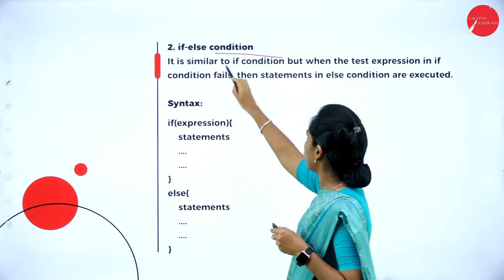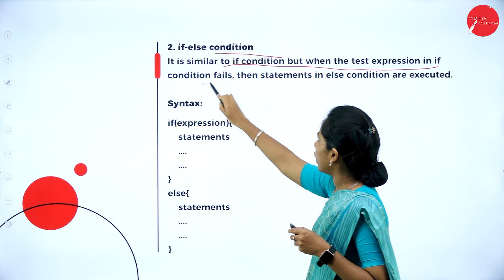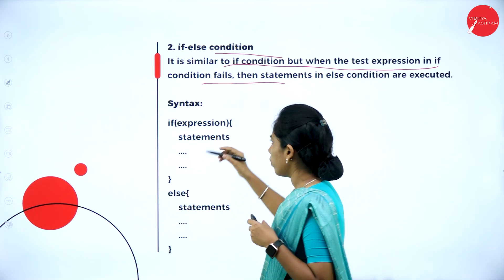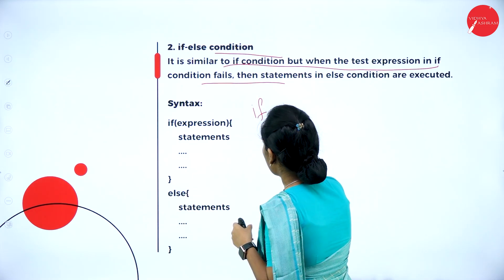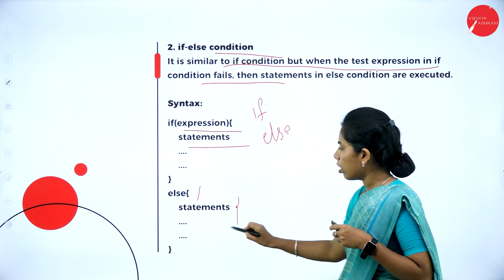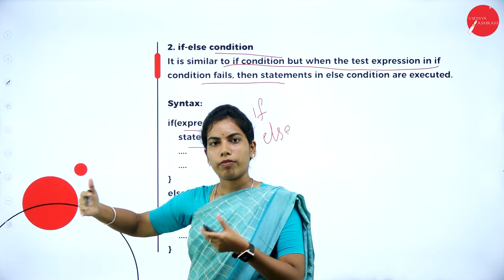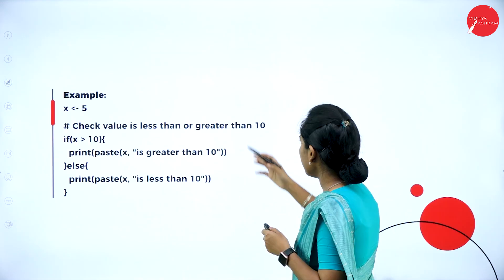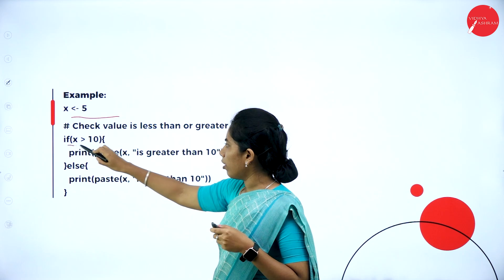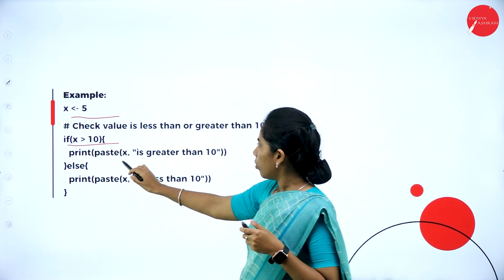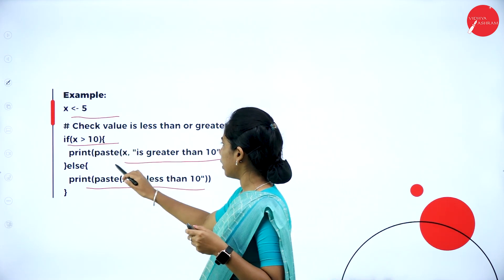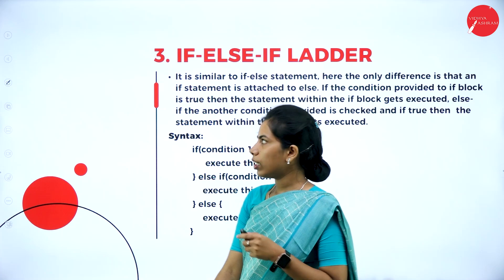The if-else condition is similar to the if condition, but when the test expression fails, the else block executes. The basic syntax is: if (condition) { set of statements } else { set of statements }. For example, assigning the value 5 to x: if x > 10 it prints one message, else since x is less than 10, the else statement will be printed.